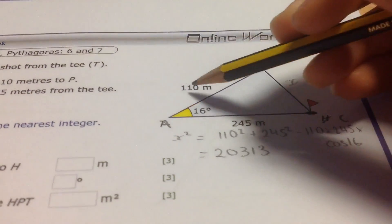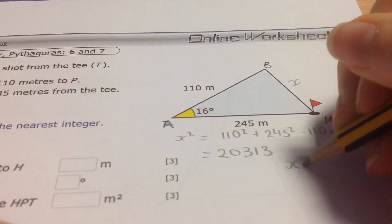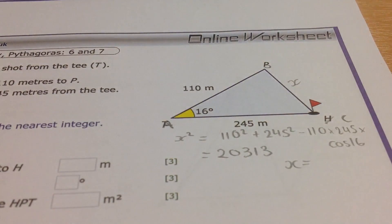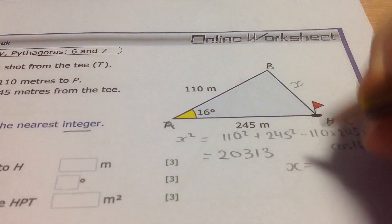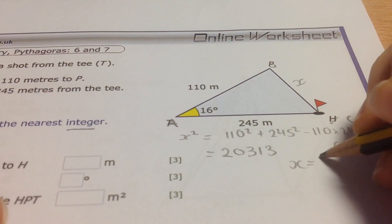So now we square root. Square root of my answer, giving me 142.5. Round that up to the nearest integer as it asks. X would be 143.